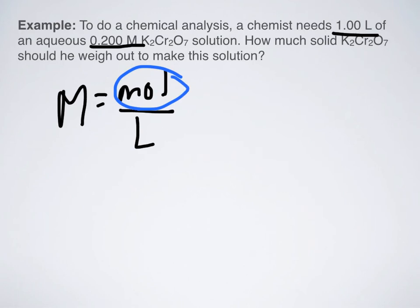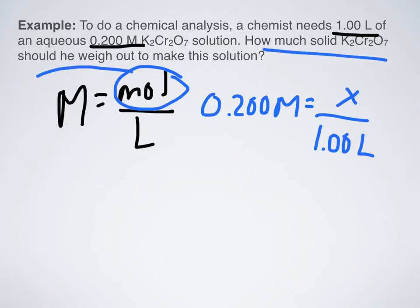So I can technically use my equation of molarity equals moles over liters to solve for the missing piece, which would be moles. If I know that the molarity is 0.200 capital M, and I know that I have one liter worth of solution, then all I really need to find is the number of moles. And it does say how much solid should he weigh out. So even though I'm going to find an answer in moles, I can easily convert that into grams. I'm not stuck with moles as my final unit.